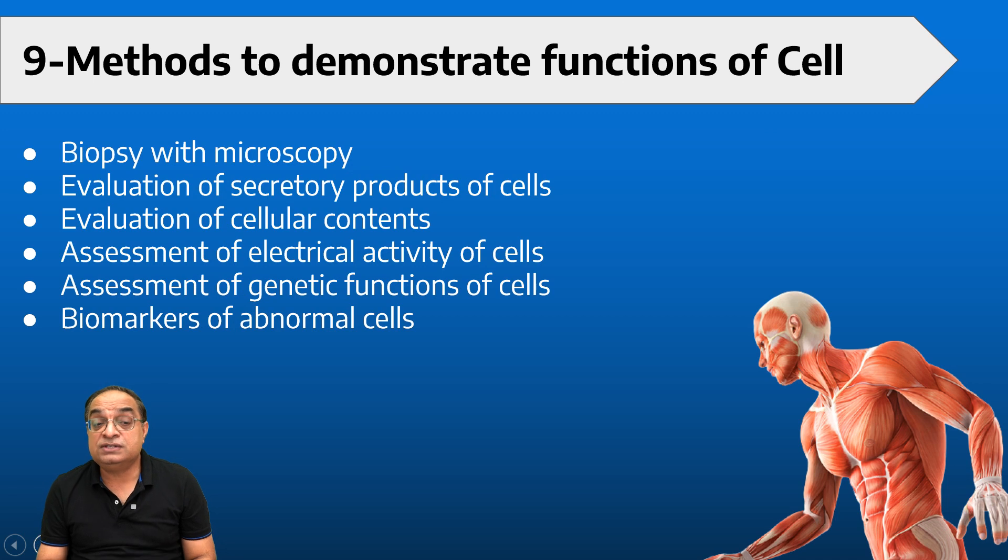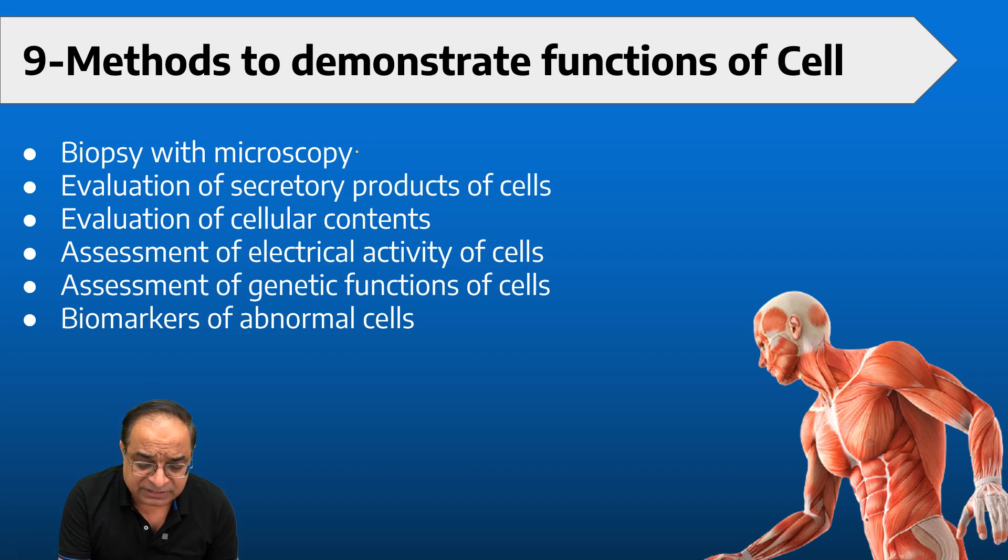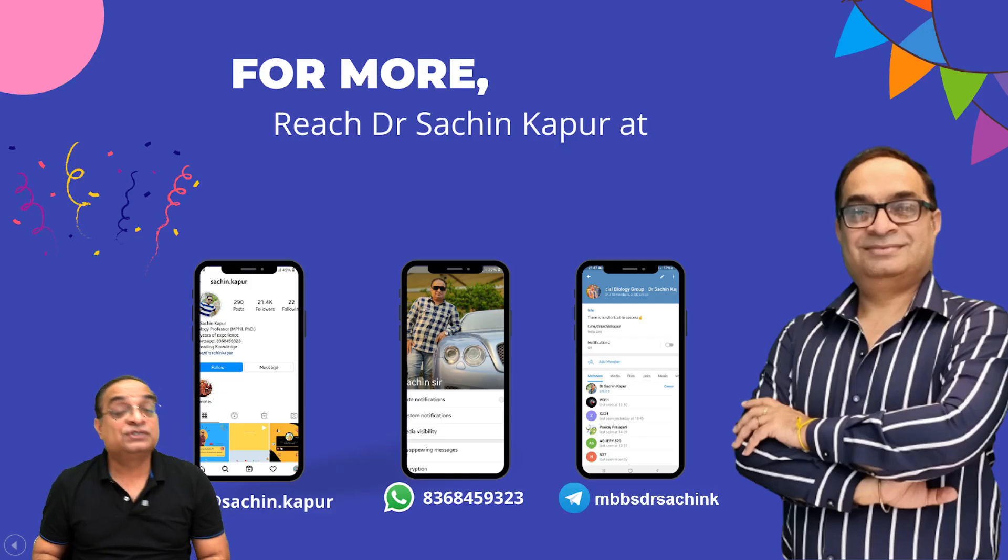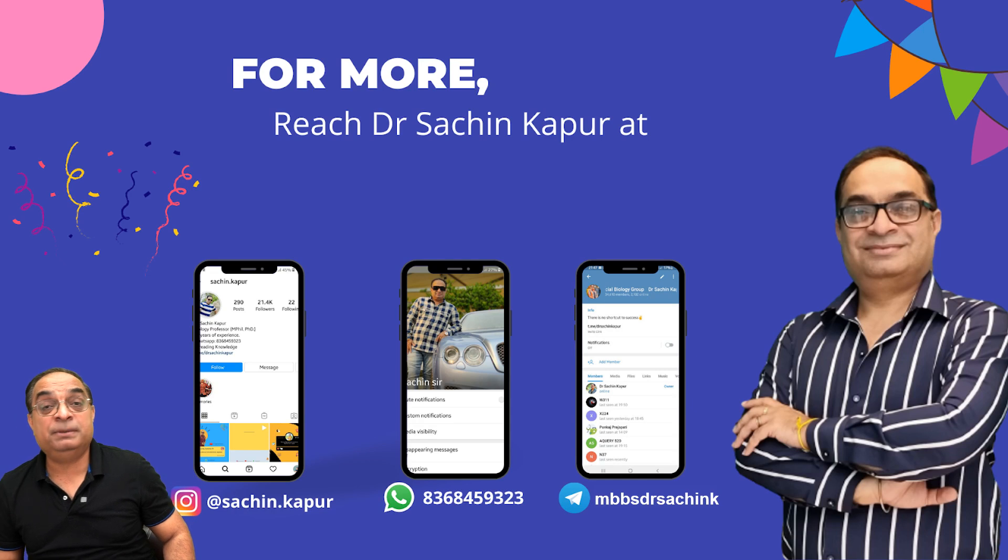Then the ninth topic is methods to demonstrate the functions of cell. How do we come to know whether a cell is functioning properly or not? We have different techniques like biopsy along with microscopy. Then there is evaluation of the secretory products of the cell, there is evaluation of the cellular contents, there is assessment of the electrical activity of the cells, assessment of genetic functions of the cell, and there are certain biomarkers of the abnormal cells. So these were the subtopics in the chapter general physiology.